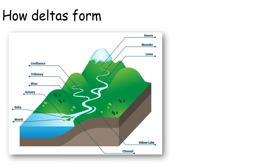How do they form? Rivers flow downhill because of gravity, and they erode and carry rock as they flow downhill. When they hit the sea, it has a huge braking effect on the river, and the river drops all of its rock. This builds up in layers to create new land, which is called a delta.